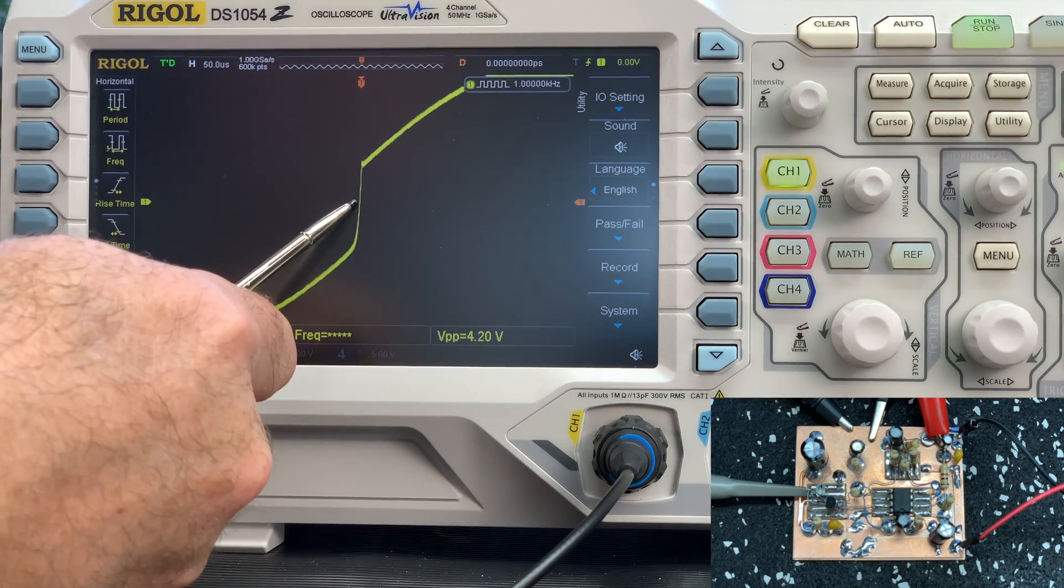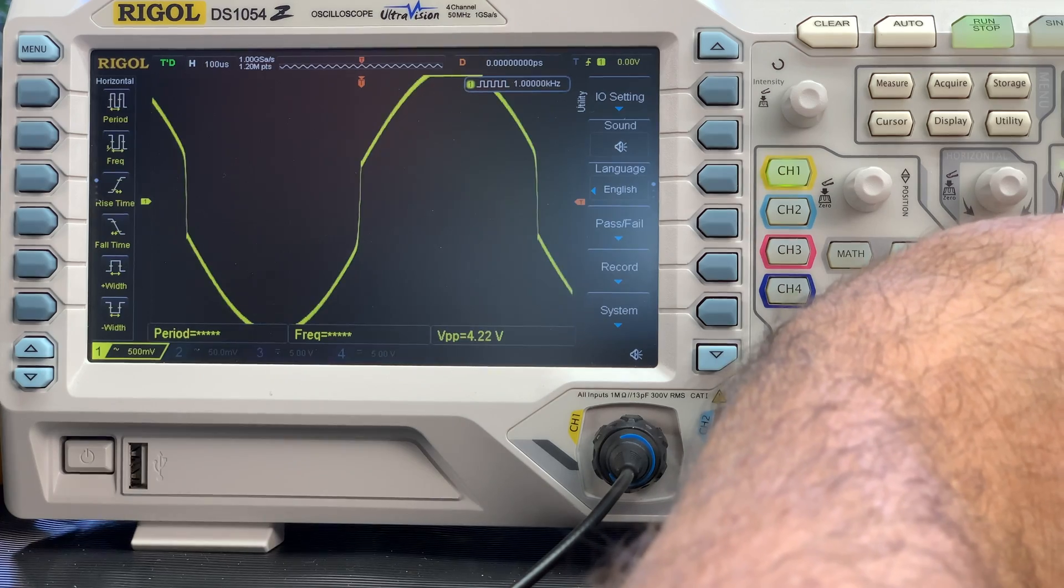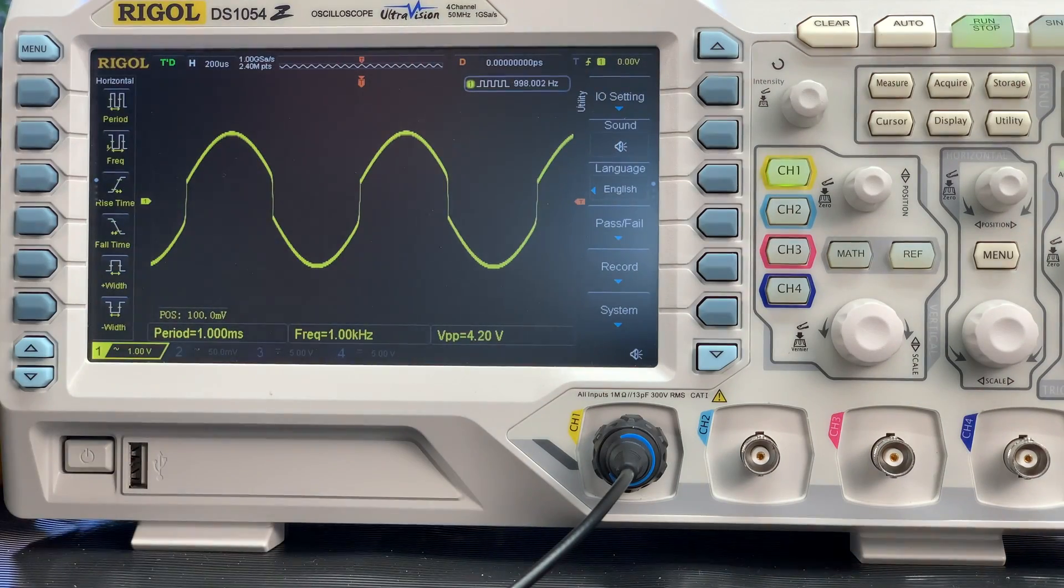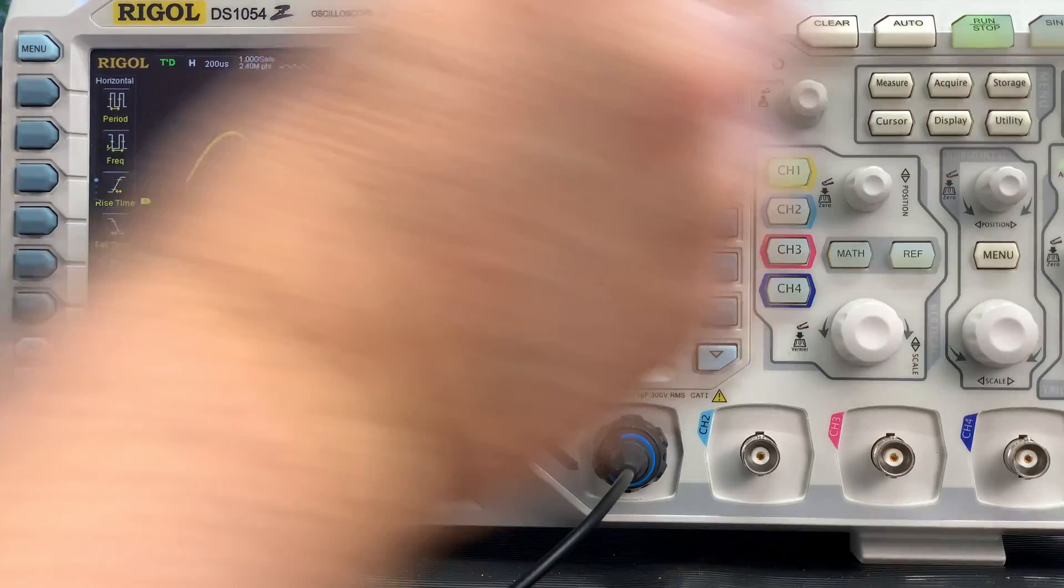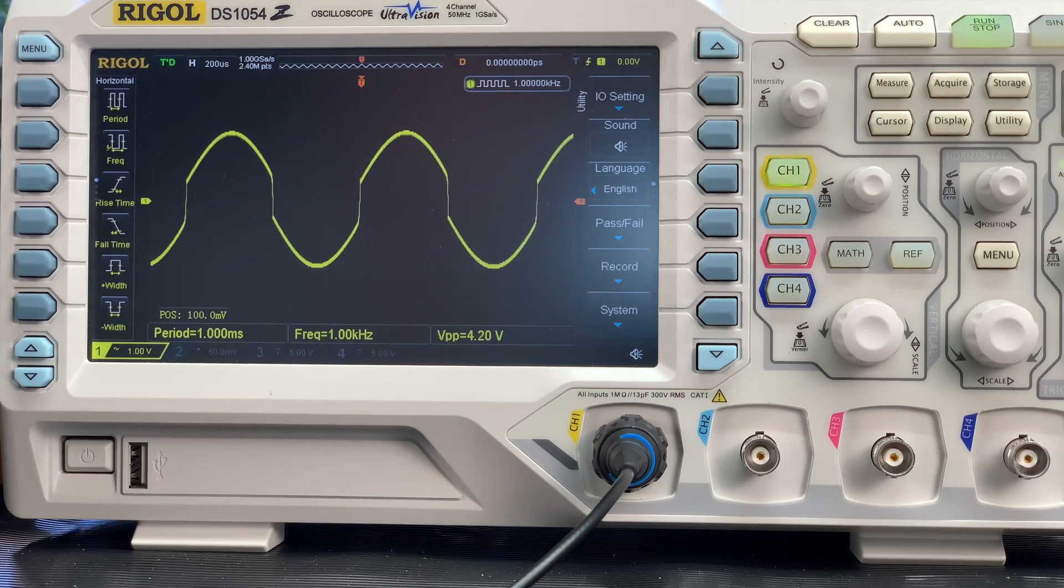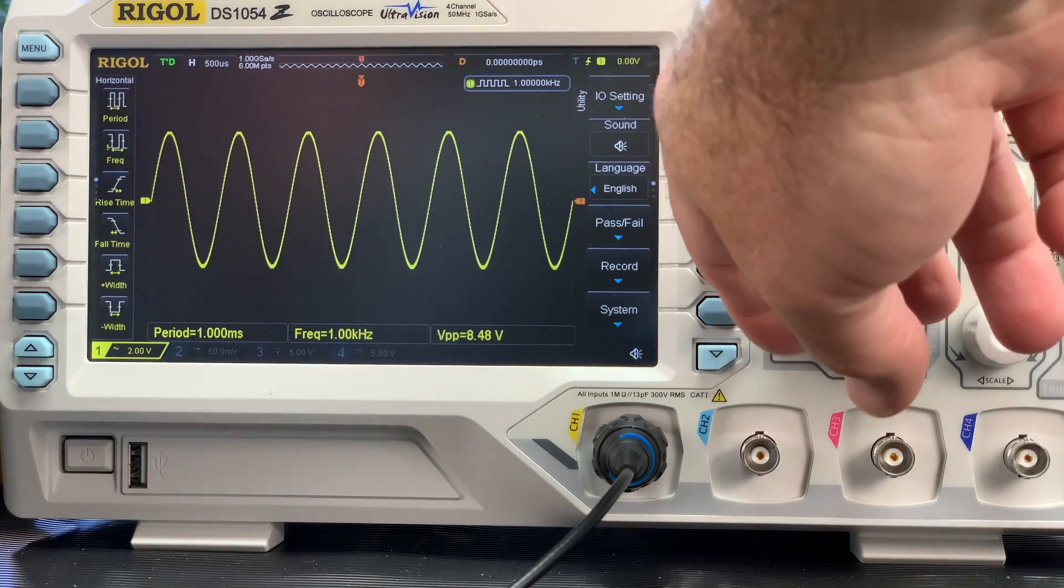You can see that in the transitions where the transistors are not conducting, the slope of the drive signal to the bases of the transistors is large. The faster the op amp can slew the drive signal on the bases of the transistors, the lower the crossover distortion that you'll have. This is the output of the amplifier into a 16 ohm load.